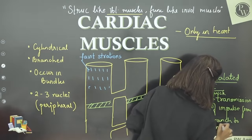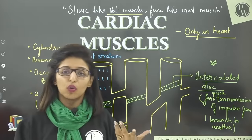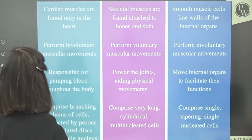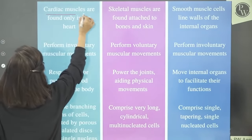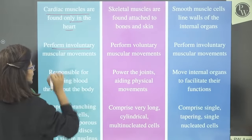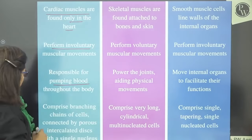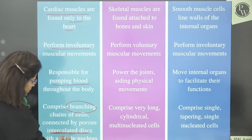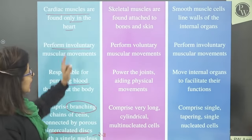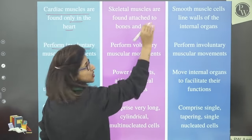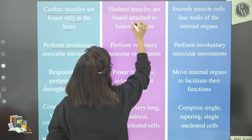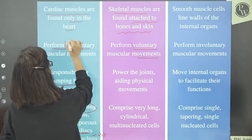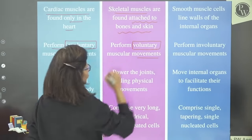So that completes cardiac muscle fibers, found only in the heart. Now let's compare all three muscle types. Cardiac muscles: found only in heart, function involuntarily, responsible for pumping blood, branched fibers connected by intercalated discs, with a single (or 2-3) nucleus. Skeletal muscles: attached to bones and skin, show voluntary movements, cylindrical, multi-nucleated, unbranched.